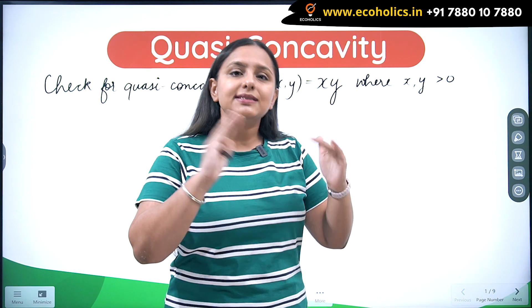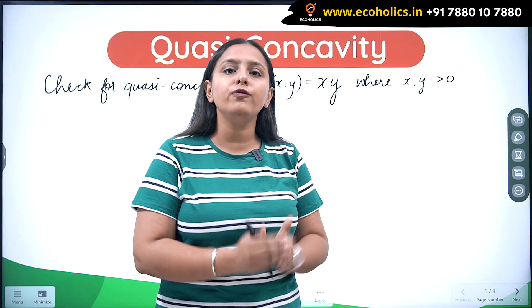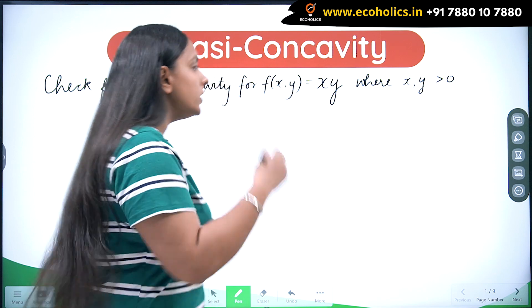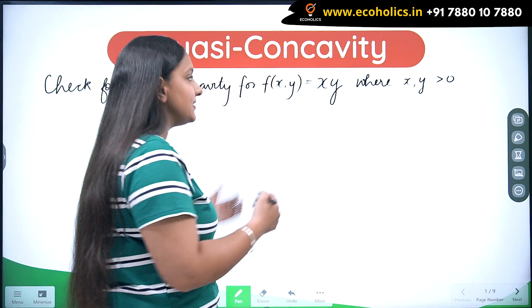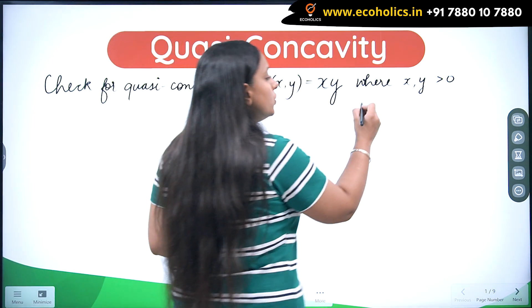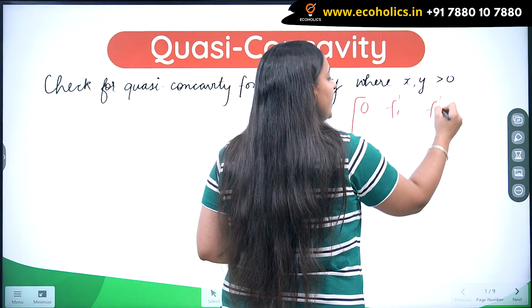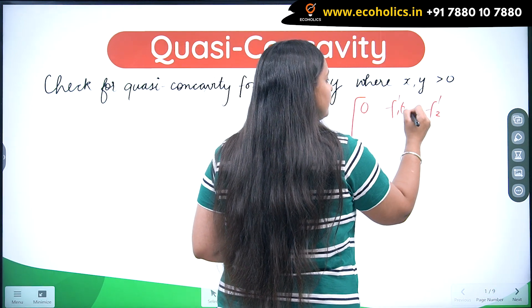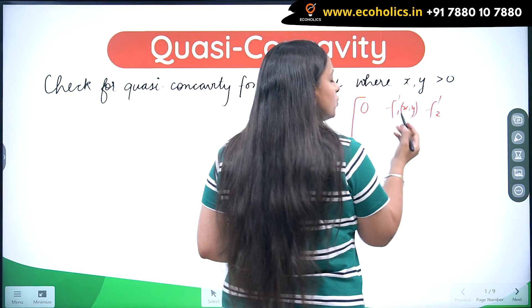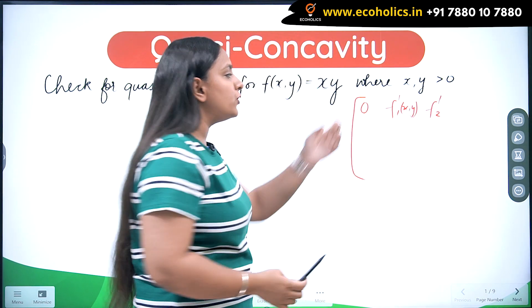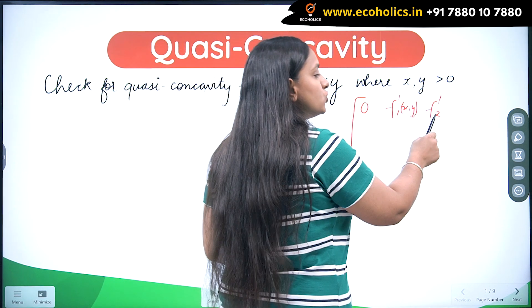In the bordered Hessian matrix, my bordered Hessian matrix for this function should look like this: 0, f dash 1, f dash 2, since I have just two variables. F dash 1 represents the first order derivative with respect to x, and f dash 2 represents the first order derivative with respect to y.